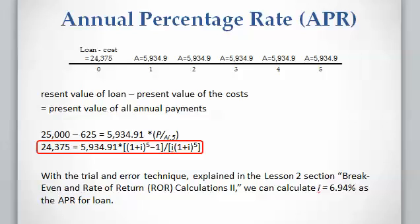This six point ninety-four percent is going to be the APR of the loan. Please note that APR should be very close to the interest rate. As you can see, the APR of six point ninety-four percent is very close to the loan interest rate of six percent.